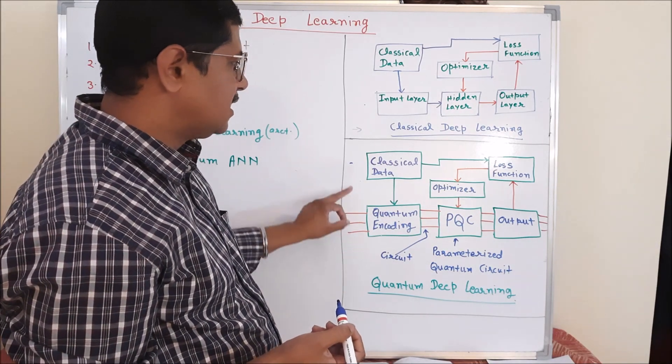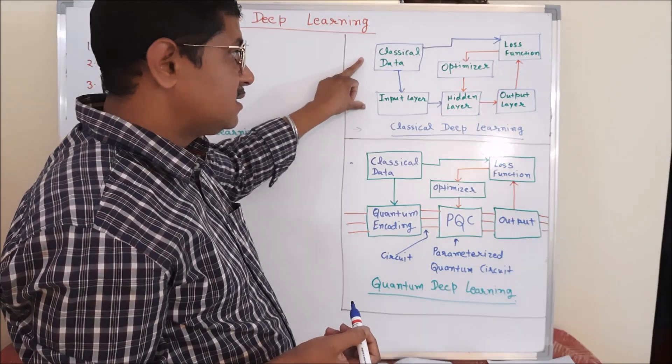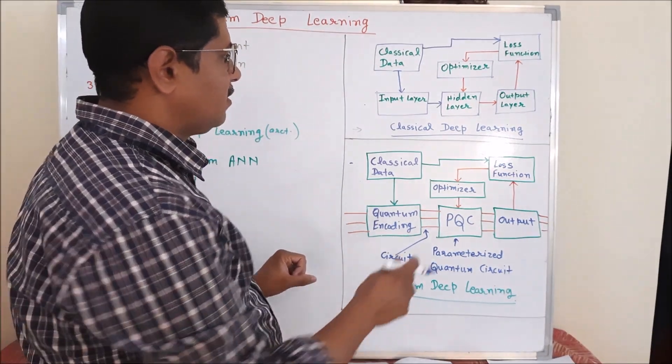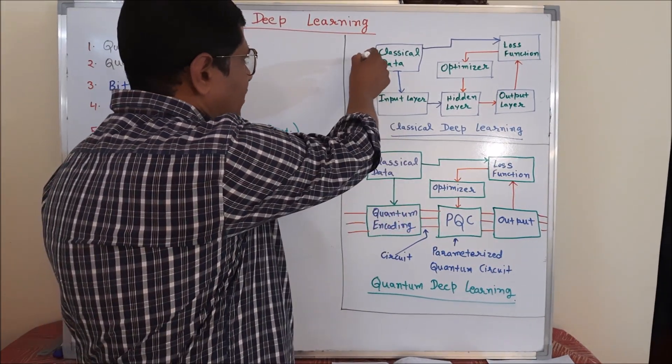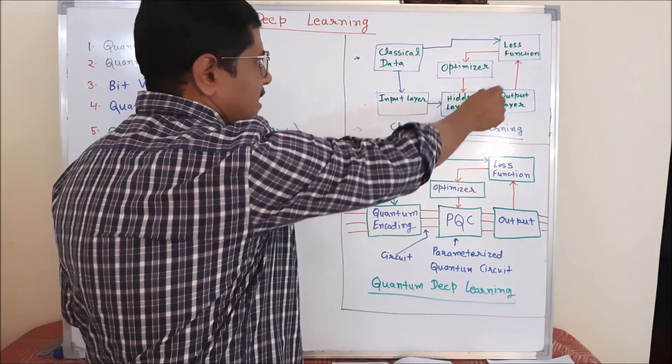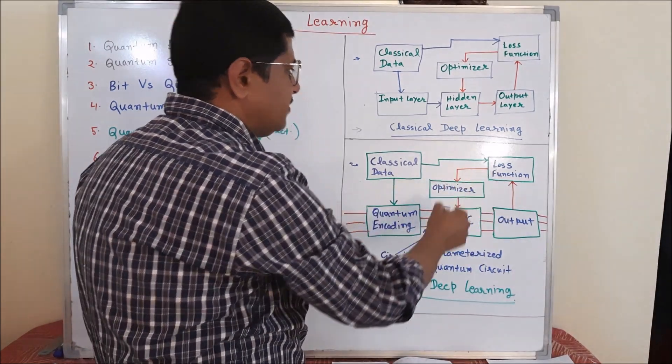So this is the difference with respect to classical deep learning. Now, from this entire discussion, you have assumed that after classical data, everything is different. Process is almost the same. They follow the same process. But the way is different.